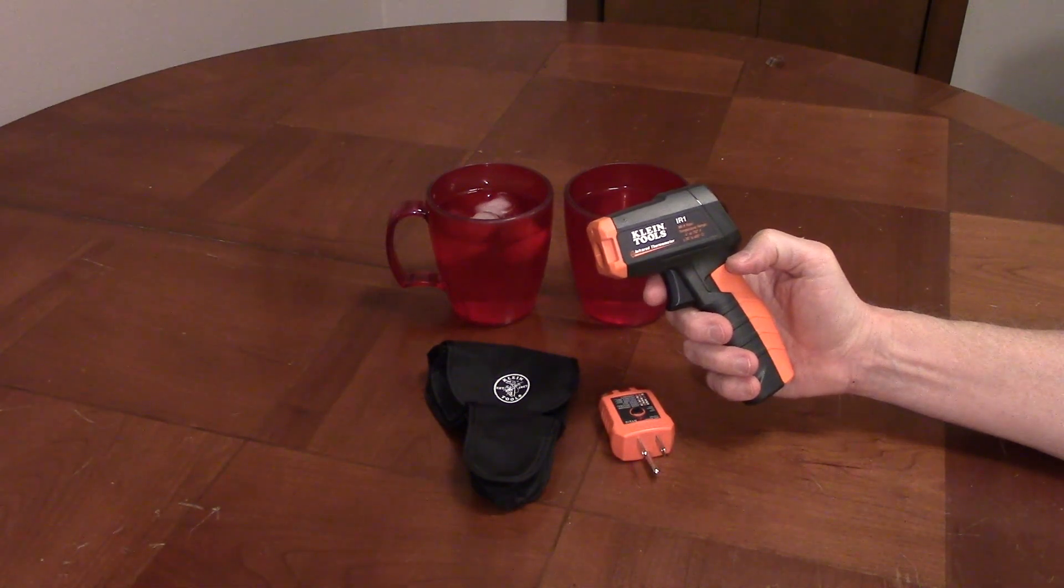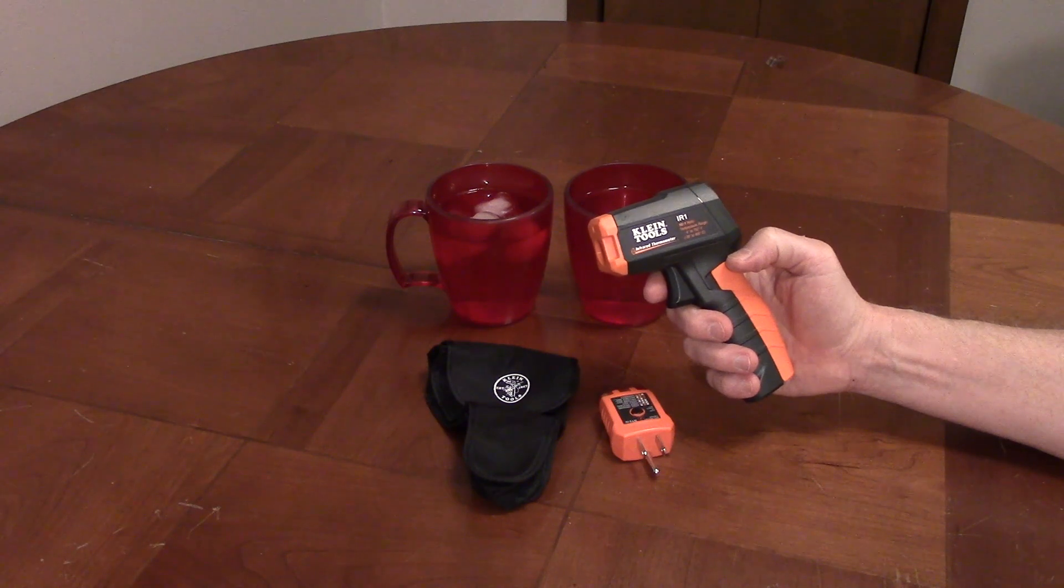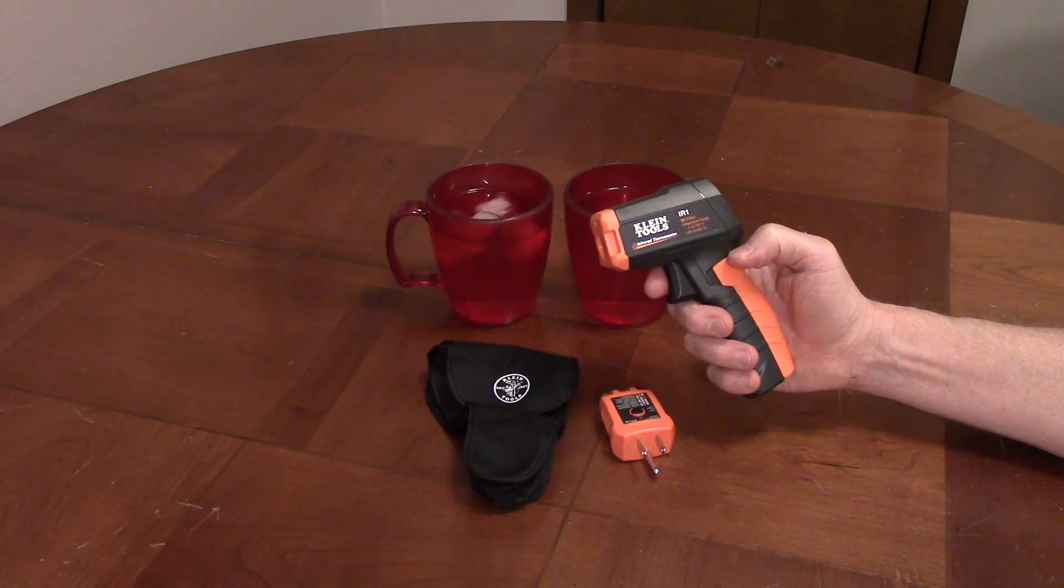Klein Tools Infrared Thermometer and Receptacle Tester Kit, model IR1-KIT, has an infrared thermometer with a 10 to 1 distance to spot ratio.